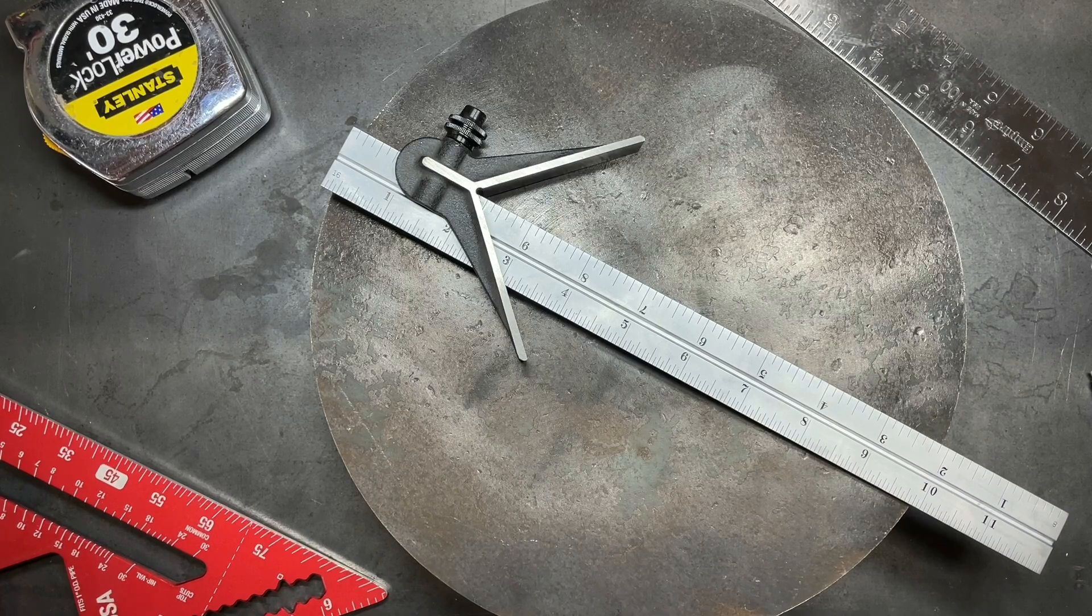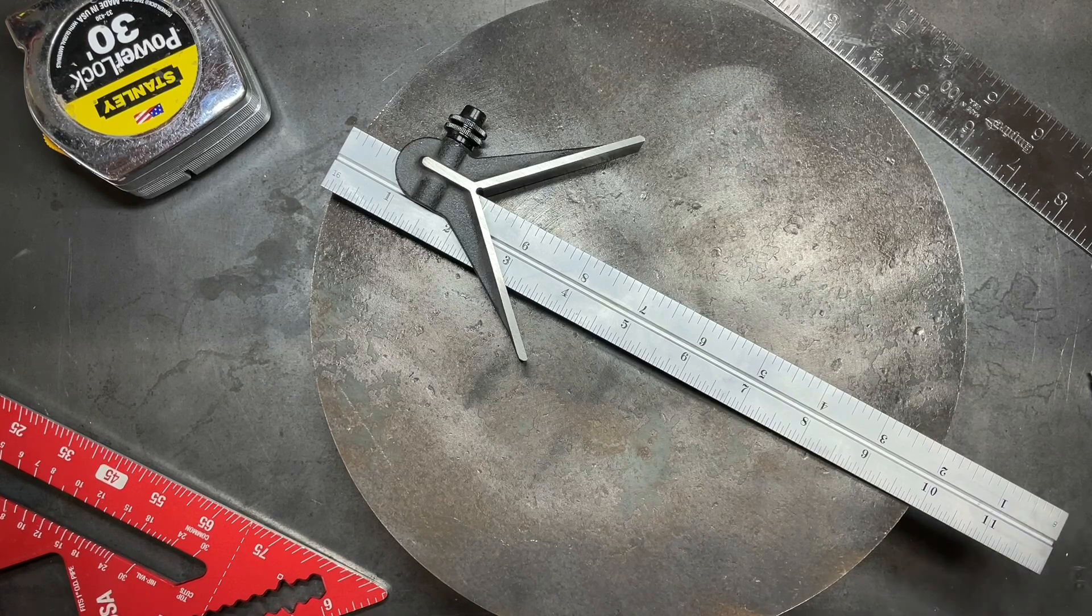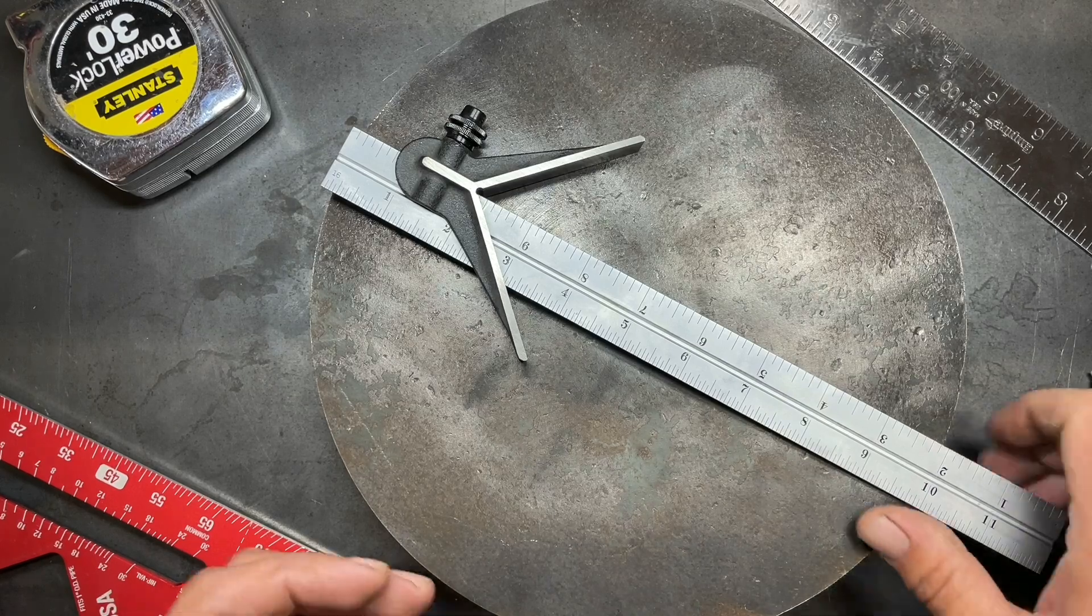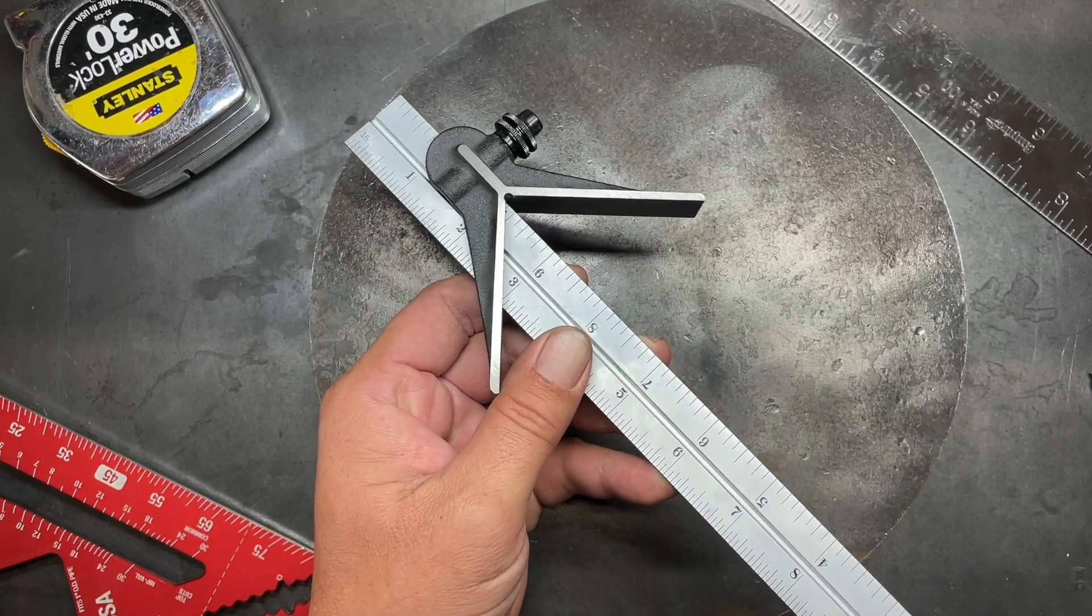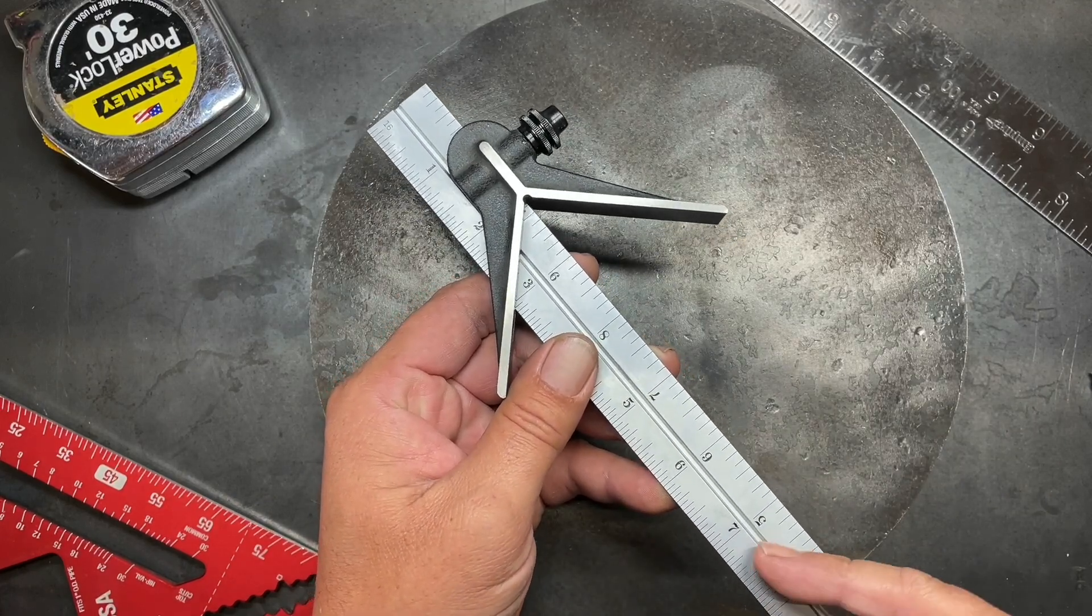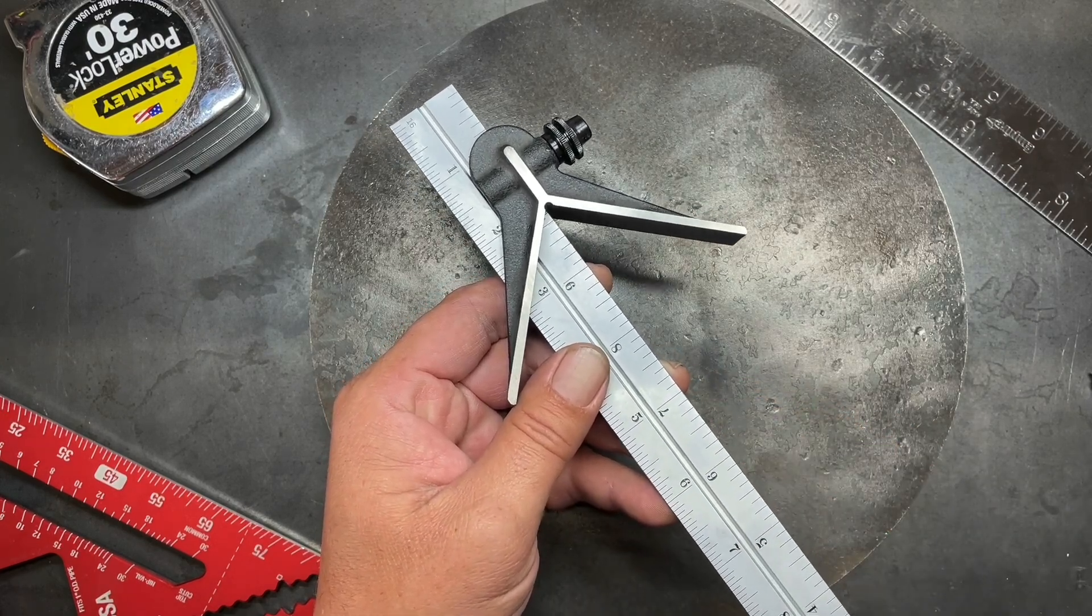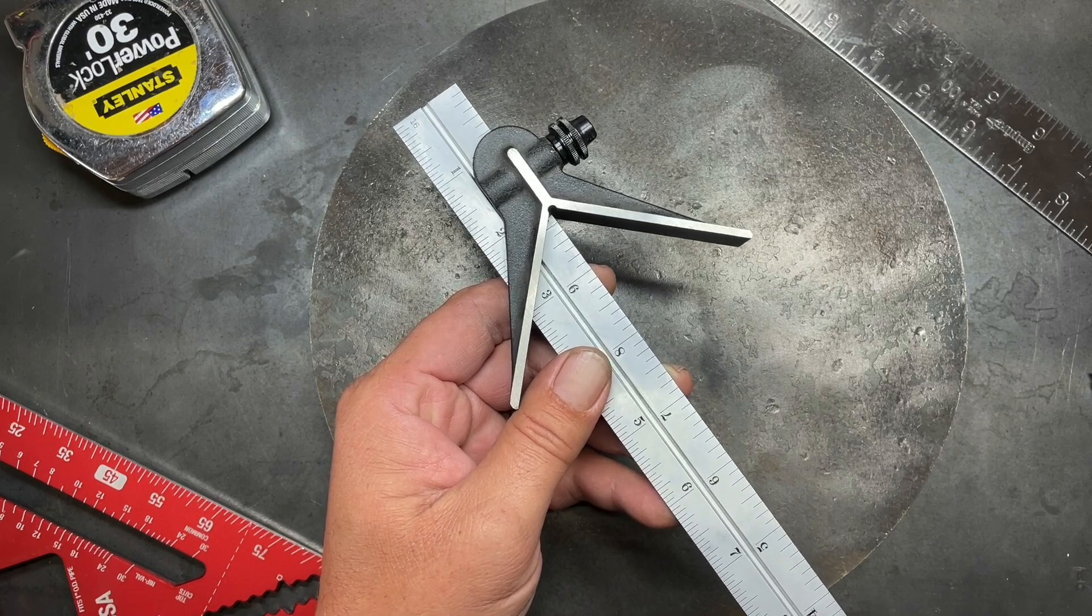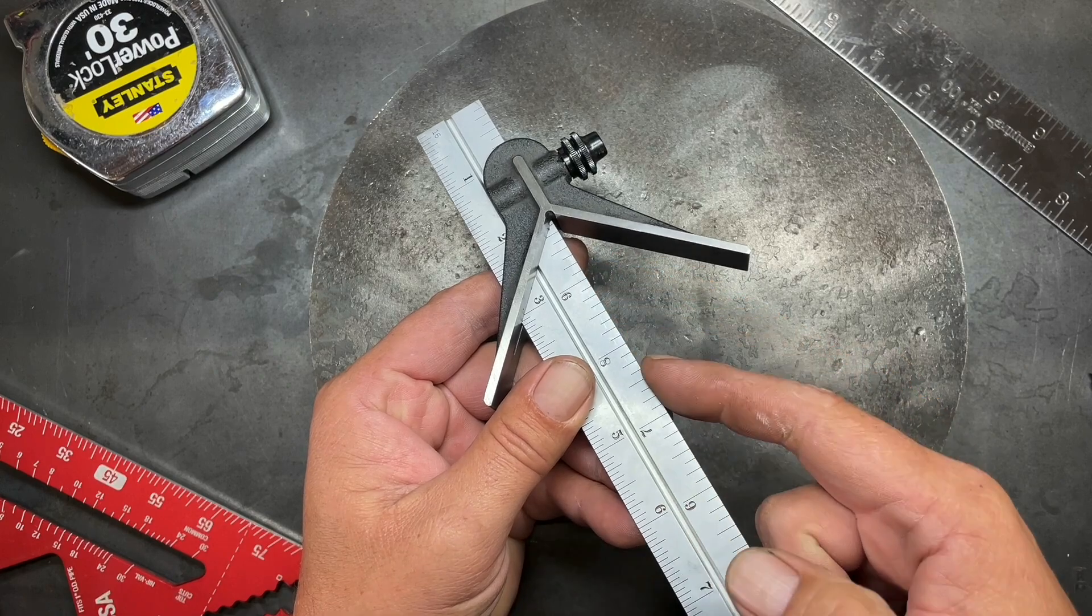The easiest way that I know of to find the center of the circle very accurately and you don't have to do any measuring, which is always a good thing. You can buy commercial made center finders. This one here is actually out of a set, a combination square set by Sterrett. It's actually a very useful tool.